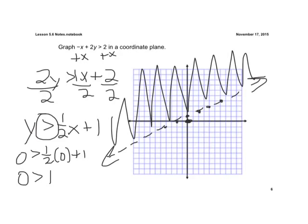So all the points above that dotted line make that inequality true. We could plug in any point in the shaded area, and that would make that a true inequality.